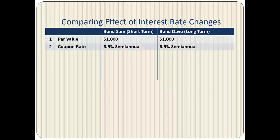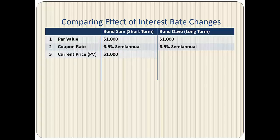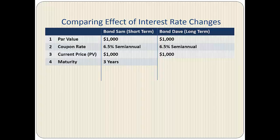Both bonds have a coupon rate of 6.5% paid semi-annually. The current price of bond SEM is $1,000 and the current price of bond DAVE is also $1,000. That means the yield to maturity for both bonds is the same as the coupon rate, or 6.5%. Bond SEM matures in three years whereas bond DAVE matures in 20 years. The time remaining to maturity is the only difference between the two bonds.